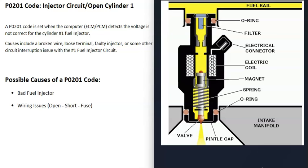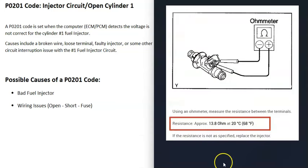These fuel injectors have a small coil inside. Every time voltage goes through it, it energizes and pulls on a magnet, which lets fuel go into the cylinder. If you have a multimeter, you can check that coil and make sure it's not open and that it has the correct ohm reading. If it is open, you know the injector is bad.